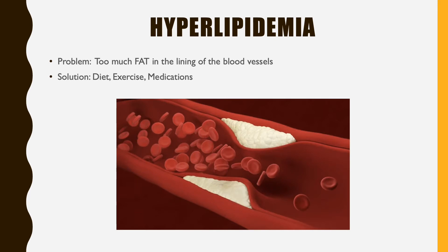Starting with hyperlipidemia — if you had to break this down, the problem is too much fat in the lining of the blood vessels. Like in this picture, that fat in the lining of the blood vessels is causing a narrowing, so blood can't get by as easily. You're going to have reduced blood flow to areas of your body that have these lipids. With a certain type of diet, lack of exercise, or sometimes just family predisposition, you can form these plaques, and these plaques get worse and worse.